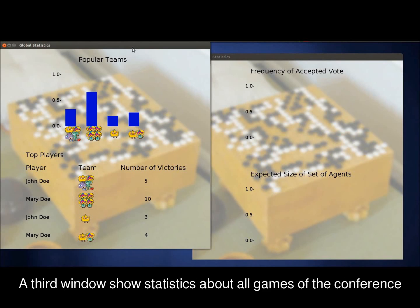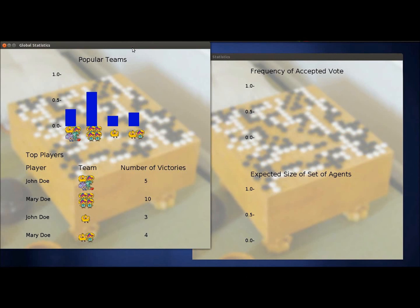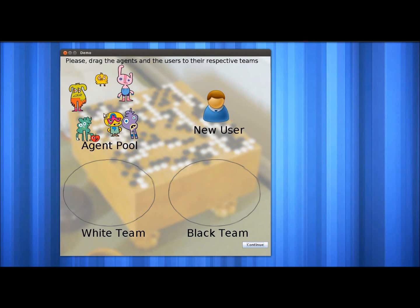A third window is also displayed here. The top chart shows how frequently certain team compositions for the agents were chosen, and the bottom displays the player's victories against these teams.